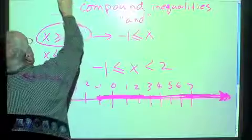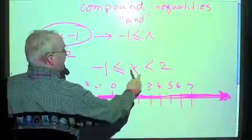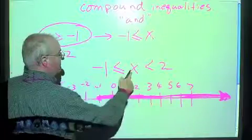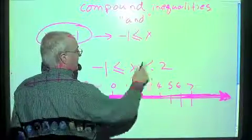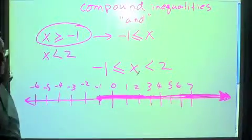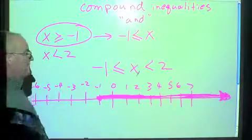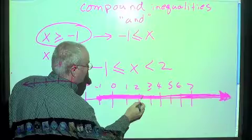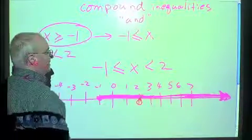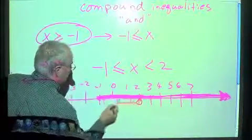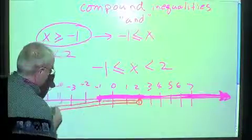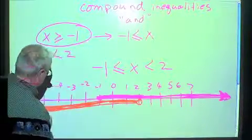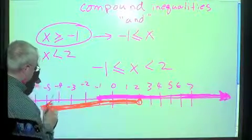Now let's look at the second part: x is less than 2. If we were graphing just this piece, are we going to have a solid circle or an open circle? It's going to be open because it says less than — there's no equal sign. So let's graph it a little bit down below. x is less than 2, so it's going to go this way.